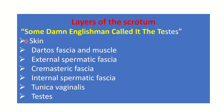Here is a mnemonic for the layers of the scrotum: 'Some Damn Englishmen Call It The Testes.' S for skin, D for dartos fascia and muscle, E for external spermatic fascia, C for cremasteric muscle and fascia, I for internal spermatic fascia, T for tunica vaginalis, and T for testes.